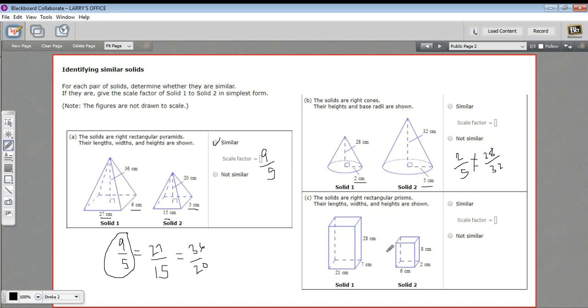All right, let's try one more. We've got a couple of rectangular prisms here. So let's pick this side right here. And our ratio is seven to two. And then let's do this side, 28 to eight.